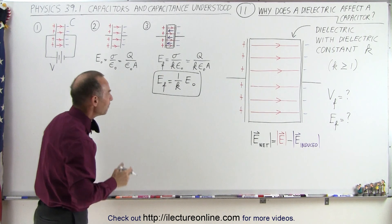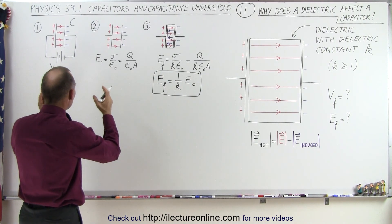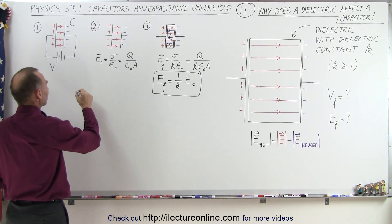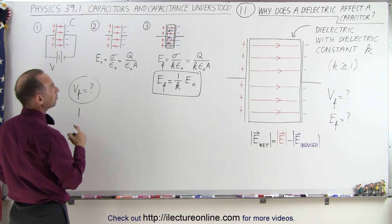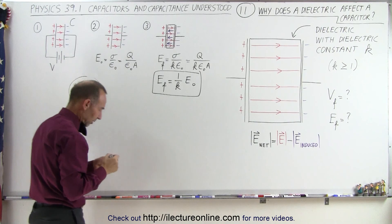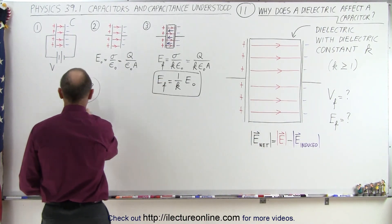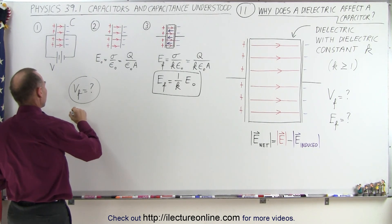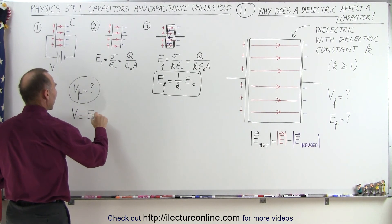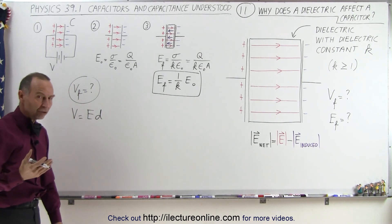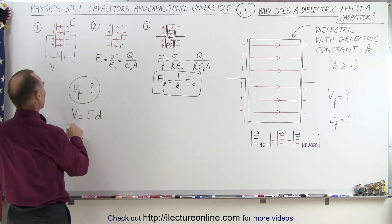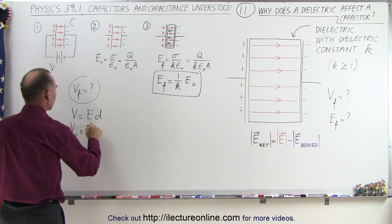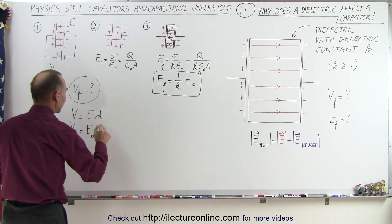How is that related? Well, the voltage across the capacitor can be defined as follows. Let's talk about V_final. The voltage is defined as E times d — that's the definition of the voltage between capacitor plates. It's the strength of the field times the distance between the plates. So the initial voltage is equal to the initial electric field times the distance between the plates.